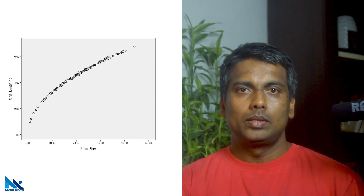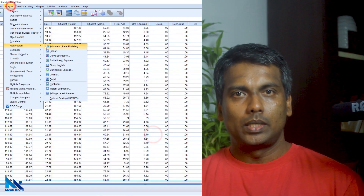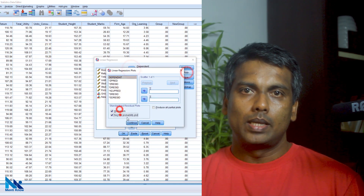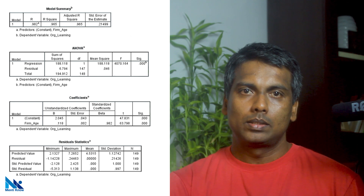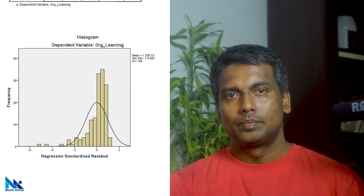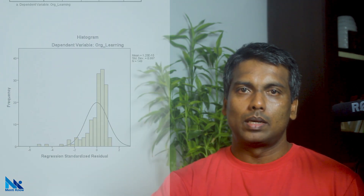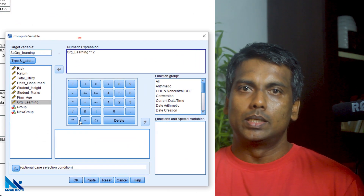There is another tweak we can use when the data shows a nonlinear relationship: we can transform the dependent variable, the independent variable, or both, to make the relationship linear. For example, in this case there is a nonlinear relationship between firm age and organizational learning. If I run the regression ignoring this nonlinearity, the model and coefficients are significant but the residuals are not normally distributed, raising concerns about accuracy. Therefore, I decided to apply a nonlinear transformation — I squared the organizational learning variable — and let's see what happens to the scatterplots.